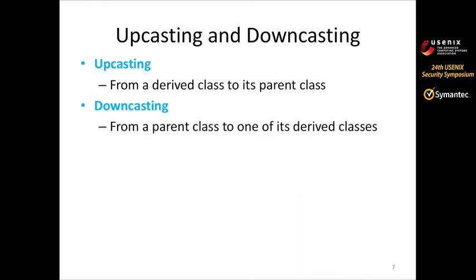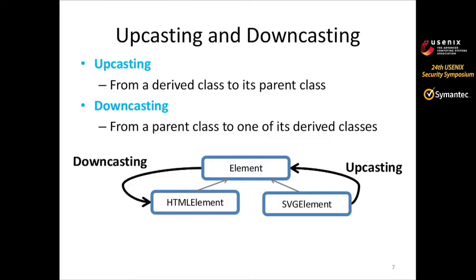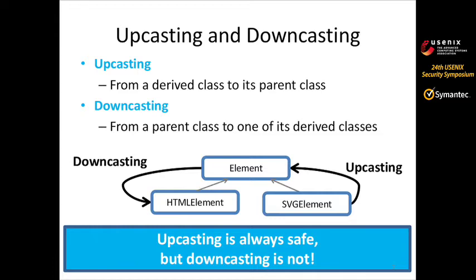Depending on the direction of the casting, there are two different castings: upcasting and downcasting. Upcasting is casting from a derived class to its parent class. Downcasting is the other way around — casting from a parent class to one of its derived classes. For example, here Element is the parent class, and the other two classes are child classes, which are specific implementations of Element. Going up the class hierarchy is upcasting; going down is downcasting. The rule of thumb is that upcasting is always safe in terms of memory safety and language specification, but downcasting is not always safe.